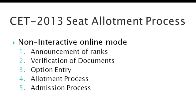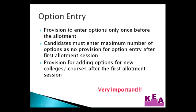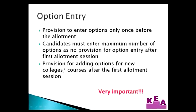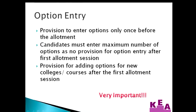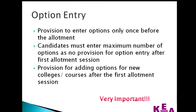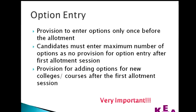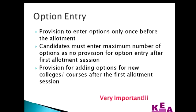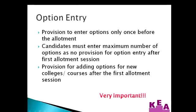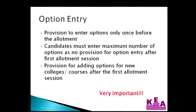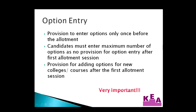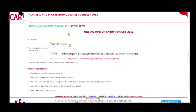Candidates will be allowed to enter their options only once. Please note: the option entry will be allowed only once, which is before the first allotment session. The options entered by the candidates will be the basis for all further allotments unless there is an addition of colleges or courses. Therefore, candidates are advised to enter all possible options — more options for all the disciplines to which they are eligible and interested — as there is no provision to add options after the first allotment session.